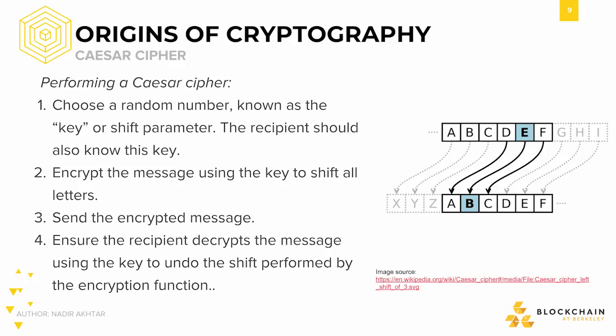This encrypted message can now be sent out to others safely, assuming no one else but the recipient knows how to decrypt the message. When the recipient receives the message, they will use the key to recover the meaning of the previously illegible information. In this case, decrypting the message requires shifting every letter in the opposite direction as the encryption function by the same amount — the value of the key. Now, the recipient has the information but no one else does.